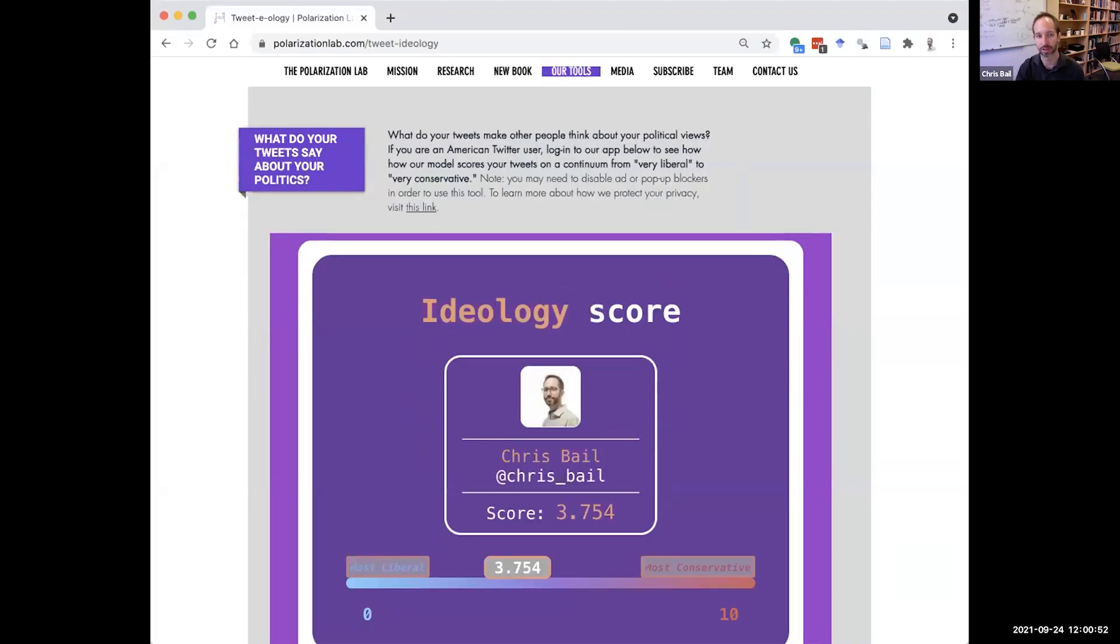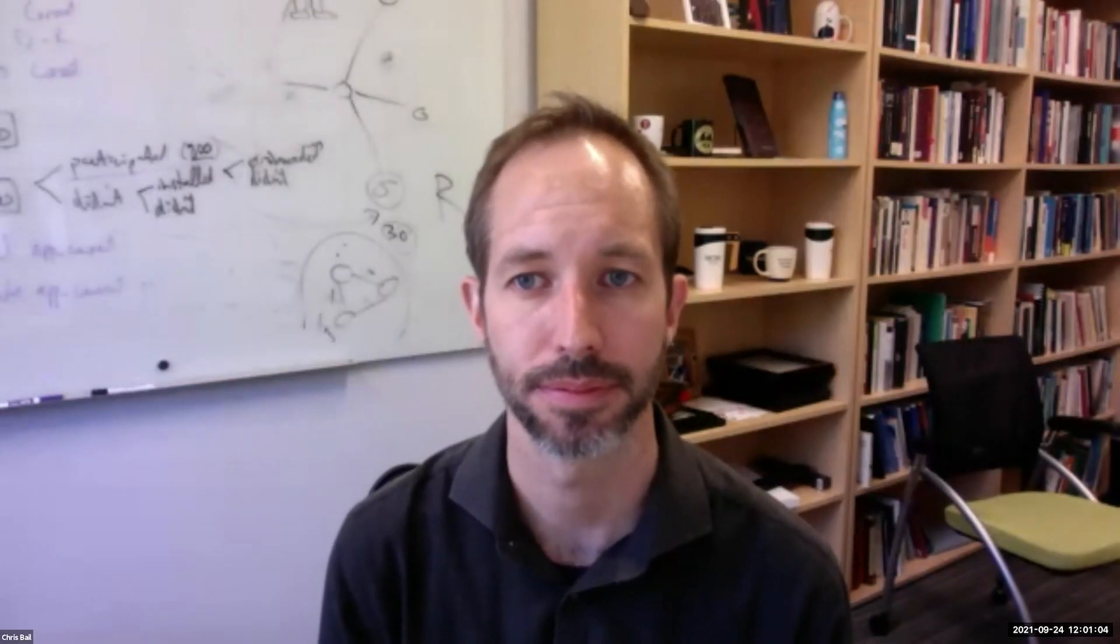It lets you sign into your Twitter account and get a look at what other people see in your politics. Right now, a machine learning model is sifting through all my tweets and comparing them to elected officials, journalists, and others to see where I fall on the continuum. Here you can see I'm a little bit left of center, according to what I produce on Twitter.